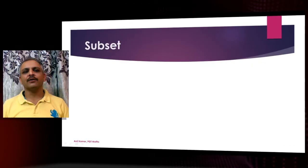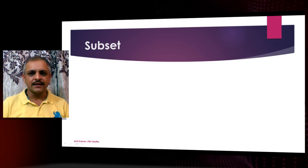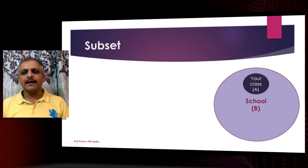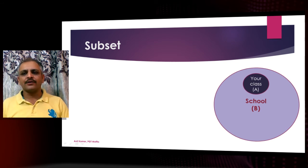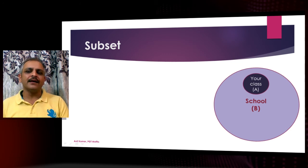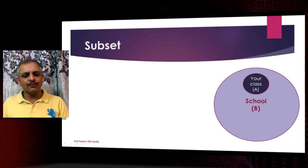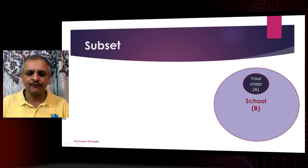First of all we will discuss about subsets. As the word indicates, 'sub' means a smaller part of a set. Let's take an example. Let set B represent the students of your school and let set A represent the students of your class. So your class is a smaller part of your school — it is a sub-part of your school. So set A is noted as a subset of B. Mathematically, if all the elements of A also belong to B, then we say A is a subset of B.